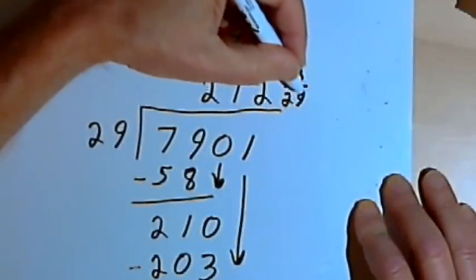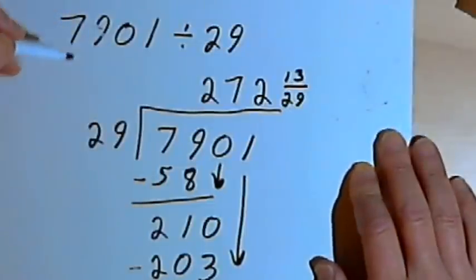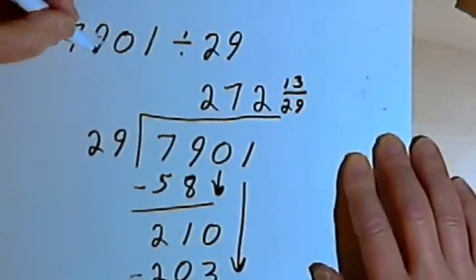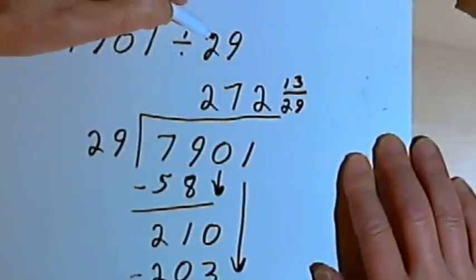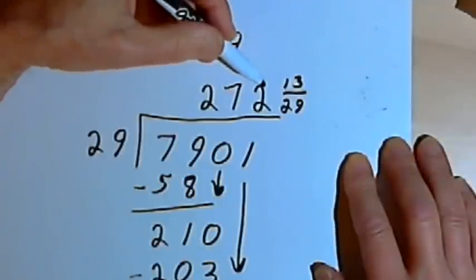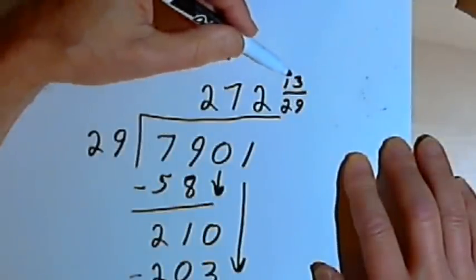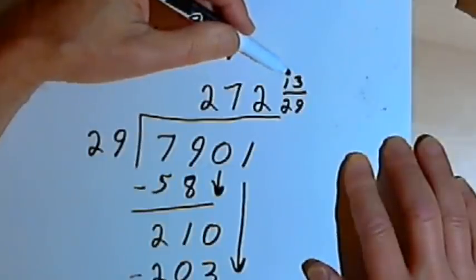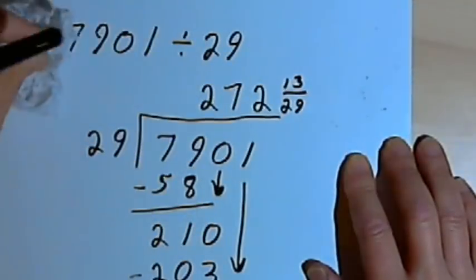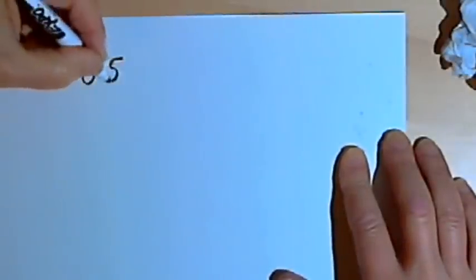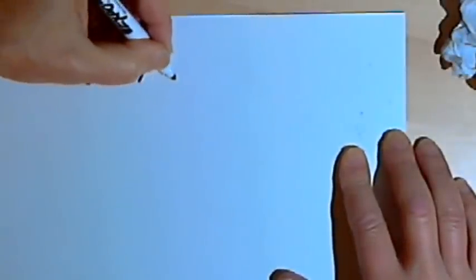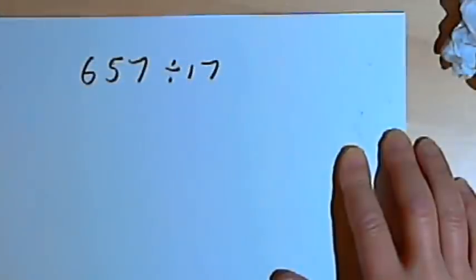7,901 divided by 29. So the result of this division, 7,901 divided by 29, is 272 and 13 29ths, or 272 and a remainder of 13. So let's try another one. So let's take the number 657 and divide that by 17.